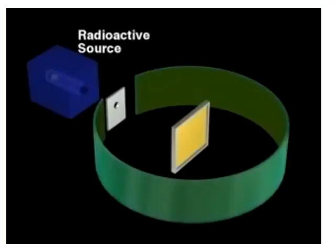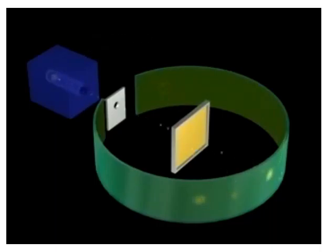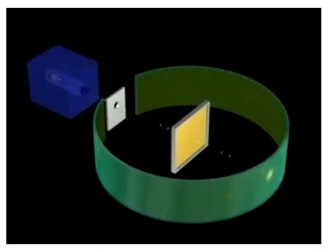In 1910, Rutherford and his co-workers were studying the angles at which alpha particles were scattered as they passed through a thin gold foil. Most of the alpha particles passed through undeflected. However, a few were found to be scattered at large angles, some even back in the direction from which they had come. This meant that they had collided with an object much more massive than the alpha particles themselves, yet so small that only a few alpha particles encountered them.